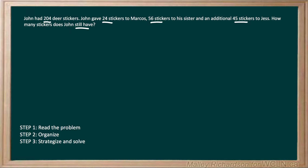Now let's strategize and solve. Let's find the total amount of stickers that he gave away. We're going to start with adding the 24 stickers he gave to Marcos, to the 56 stickers he gave to his sister, and add on the 45 stickers he gave to Jess. 24 plus 56 plus 45 gives us 125 stickers that he gave away.